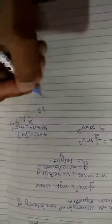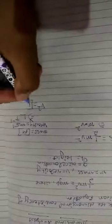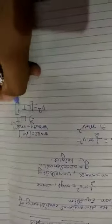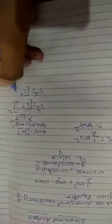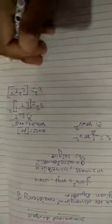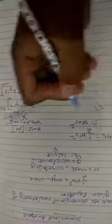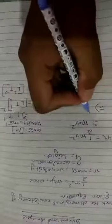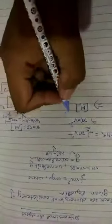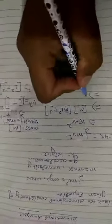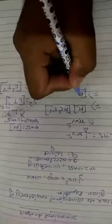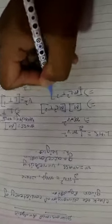Since it is v², we use (LT⁻¹)², so v² equals L²T⁻². Substituting, we get M × L²T⁻², so the overall dimensional formula for the LHS is ML²T⁻².